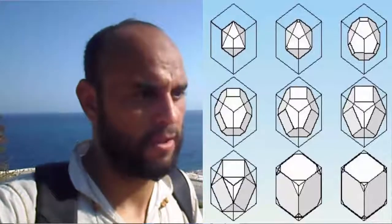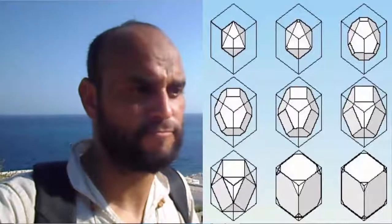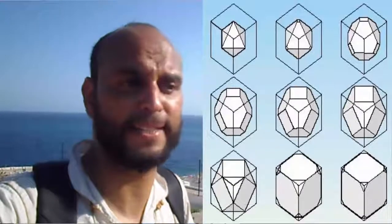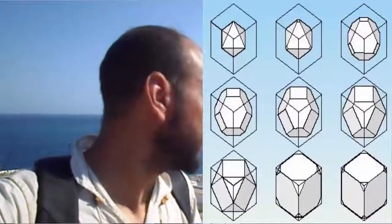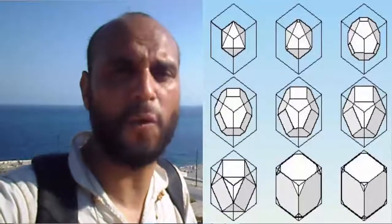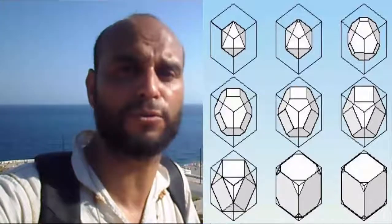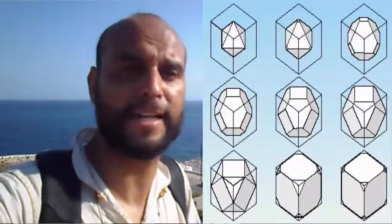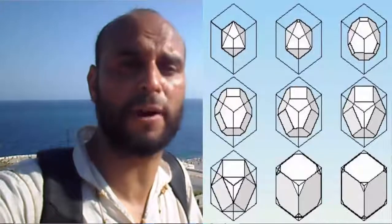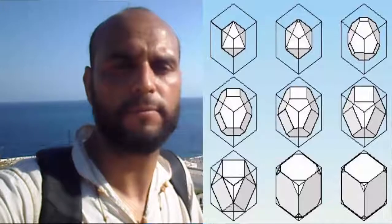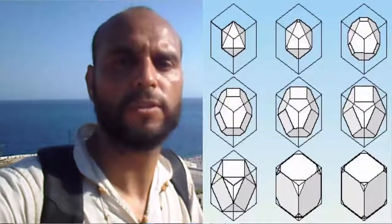Fibrous diamonds are composed of numerous elongated fibrous crystals of microscopic size. The overall morphologies of fibrous diamonds, however, can resemble those of some crystalline diamonds. Fibrous diamonds can also occur as fibrous overgrowths around a monocrystalline diamond core. Polycrystalline diamonds consist of countless small diamond crystals.